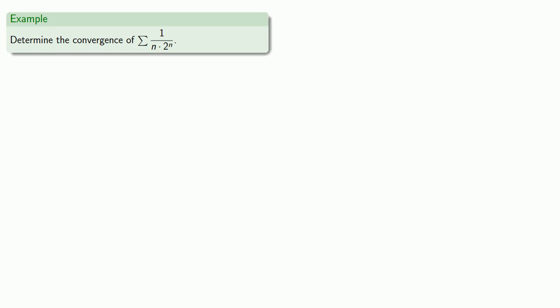Let's take a look at an example. Let's see if we can determine the convergence of the series whose terms are 1 over n times 2 to the power n. We see that our series looks like 1 over n, and it also looks like a geometric series, so let's see if we can compare it to one of these two series.